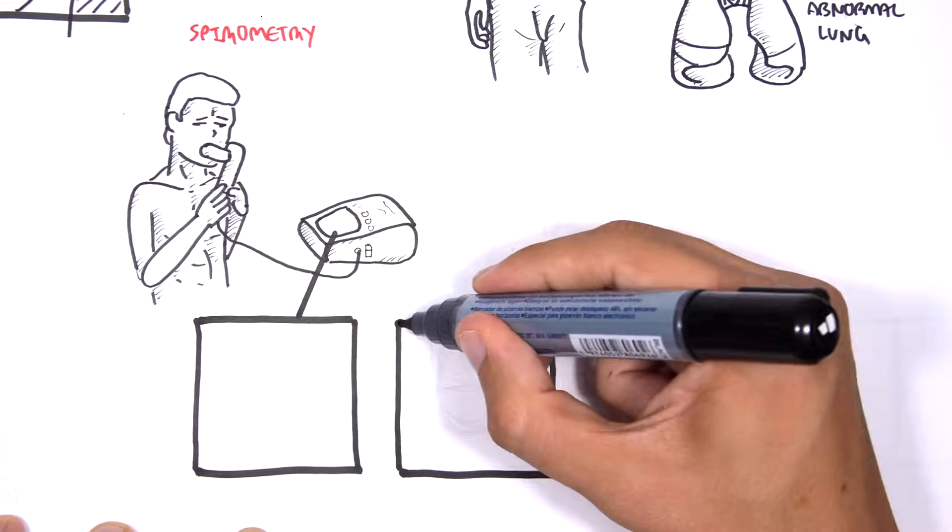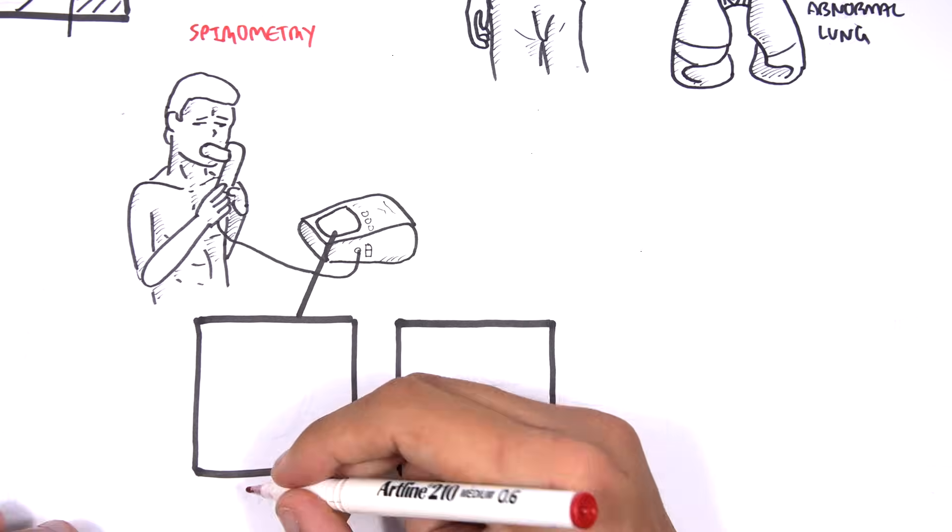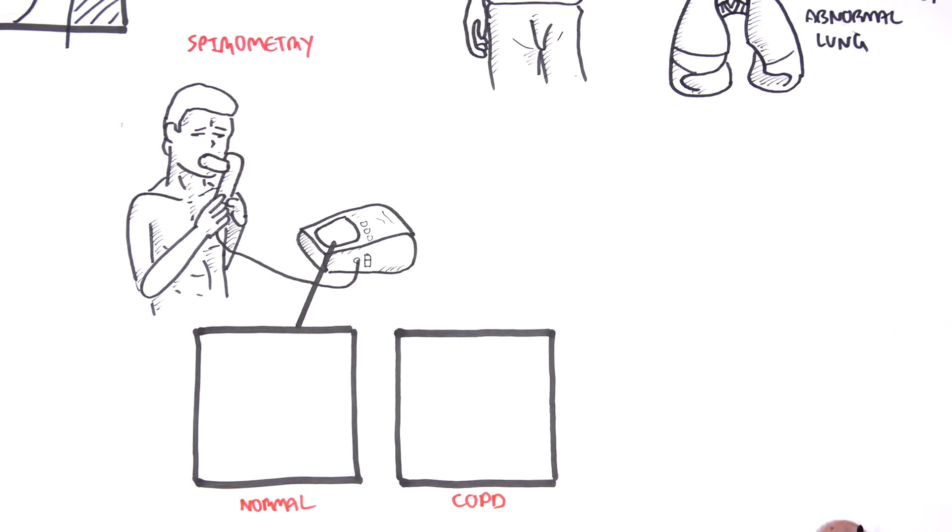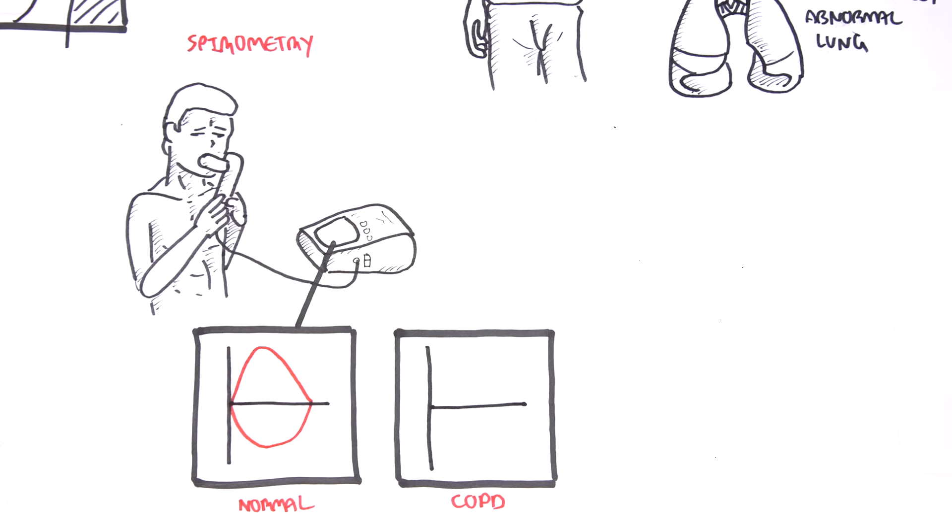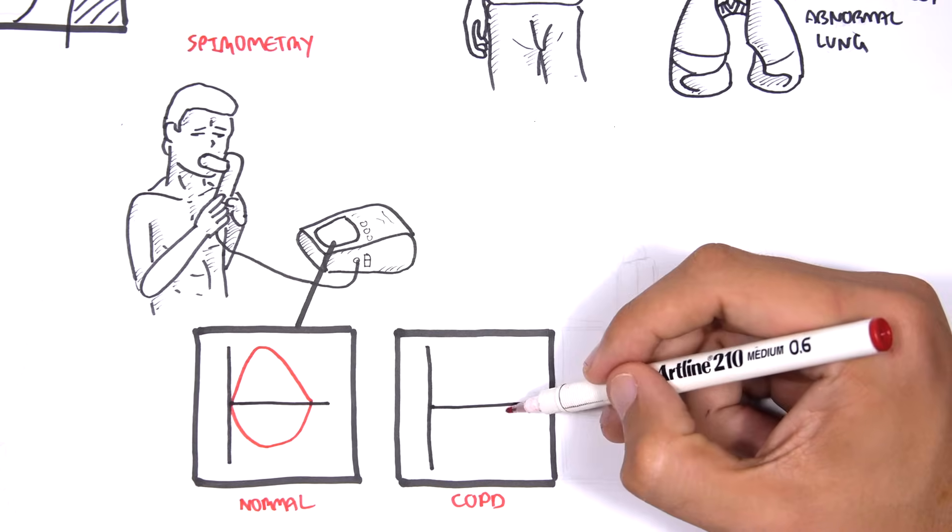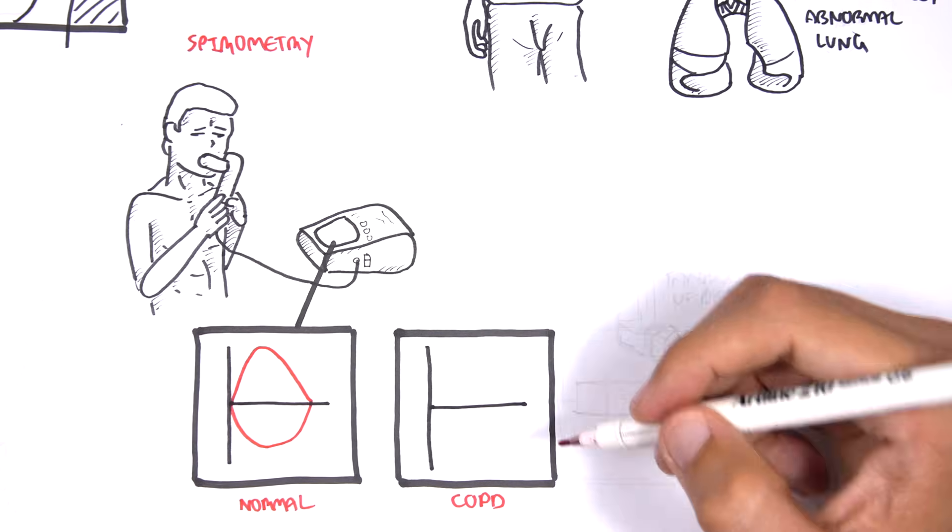Here we have a normal spirometry reading with a normal inspiratory and expiratory curve. However, let's compare this to a graph with someone who has COPD.